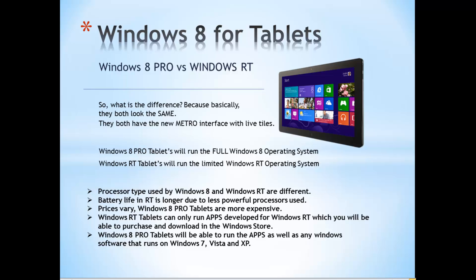The final and most important difference is the capabilities of the operating system. Windows RT tablets can only run apps developed for Windows RT that you can purchase and download from the Windows Store — similar to Google Play or the Apple App Store. You cannot download and install arbitrary Windows software, like from a website, on a Windows RT tablet; it simply won't run. Windows 8 Pro tablets can run those Windows Store apps as well as any Windows software that runs on Windows 7, Vista, XP, or Windows 8.